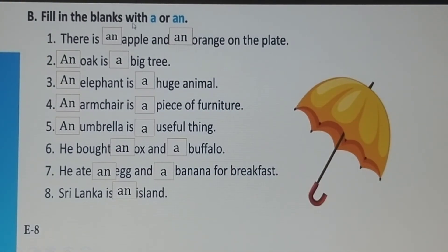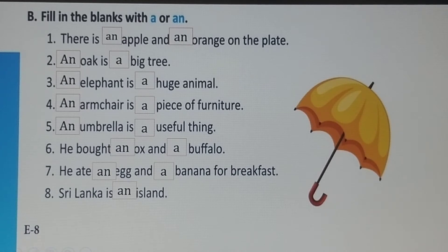Now fill in the blanks with 'a' or 'an': There is an apple and an orange on the plate. An oak is a big tree. An elephant is a huge animal. An armchair is a piece of furniture. An umbrella is a useful thing. He bought an ox and a buffalo. He ate an egg and a banana for breakfast. Sri Lanka is an island. In this way you have to write 'a' or 'an' in the blanks.